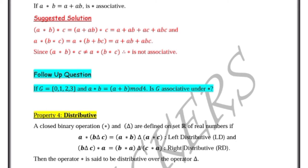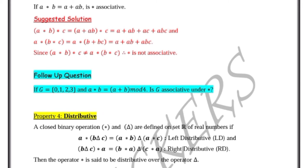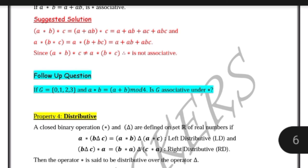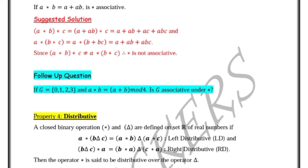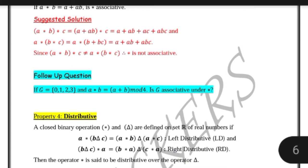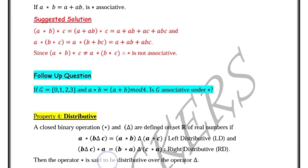In this video, we are going to learn about property number four of binary operations: distributive. A closed binary operation star and triangle are defined on set R of real numbers. If A star (B triangle C) equals (A star B) triangle (A star C), it is left distributive. If (B triangle C) star A equals (B star A) triangle (C star A), it is right distributive. Then the operator star is said to be distributive over the operator triangle.